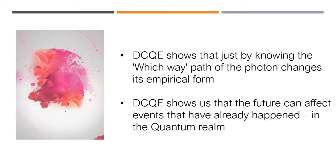What was the point of the delayed choice quantum eraser experiment? It had two purposes. First, with the double slit, people were saying that when you measure the photon you are actually disturbing it — measurement involves sending a photon to collide with another and come back. Scientists asked whether the act of measurement itself is affecting whether we get interference or a clump pattern. This experiment has no measurement; it uses smoke and mirrors to determine which way the photon traveled.